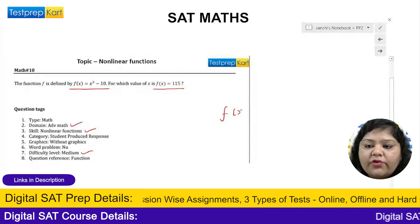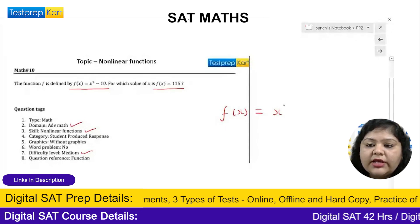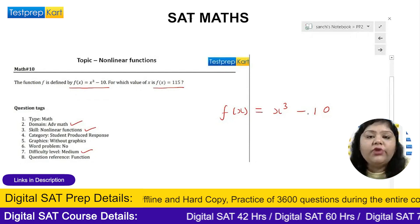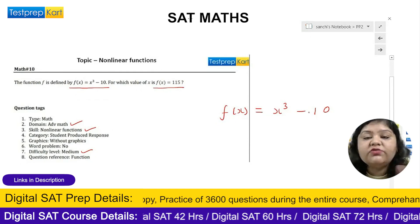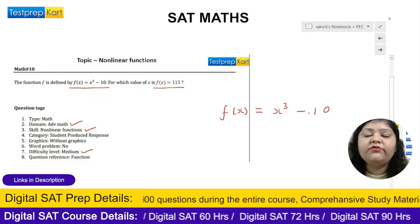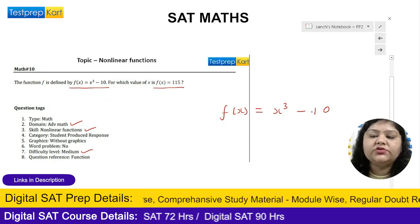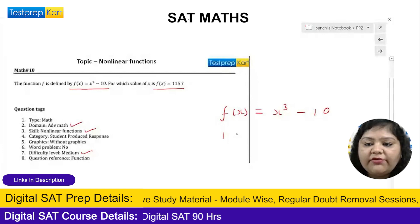f(x) = x³ - 10. Now they have already given you a value of f(x) which is 115. They are asking for which value of x it becomes 115. So just put down the value f(x) = 115 and solve for it.